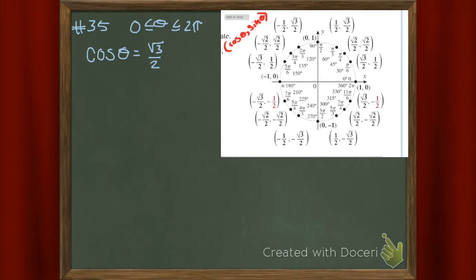Let me remind you that on a unit circle, our coordinates are cosine comma sine, because cosine is governed by x and sine is governed by y.